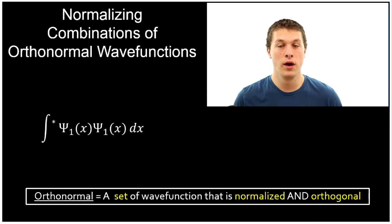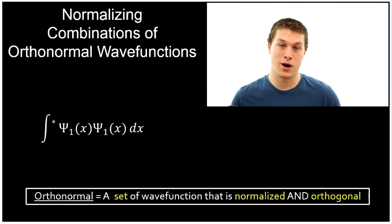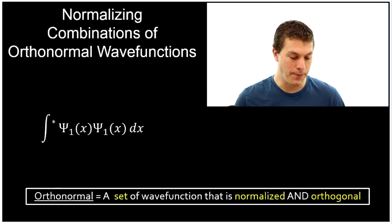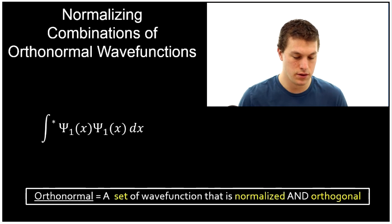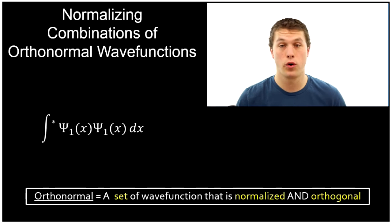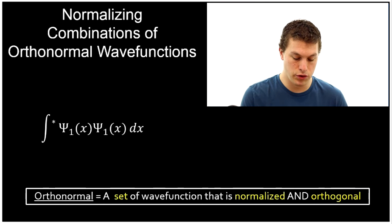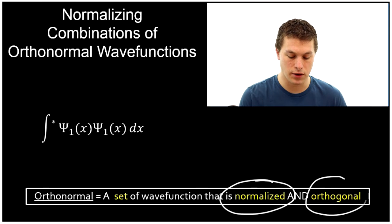So by the time you get to the end of this video, you're going to think wave functions that are ortho-normal are awesome — they're super easy to normalize. So first, what is ortho-normal? Ortho-normal is a property of a collection of wave functions that's both normalized and orthogonal.